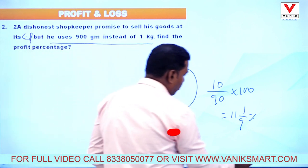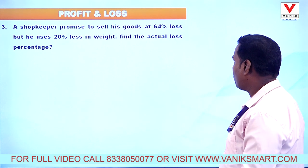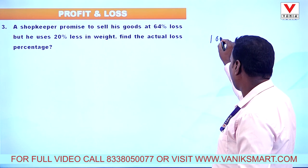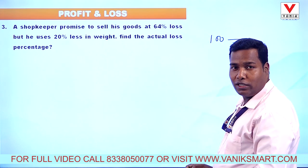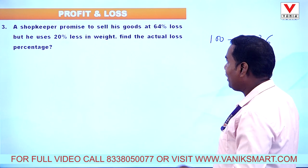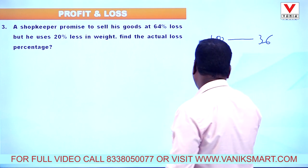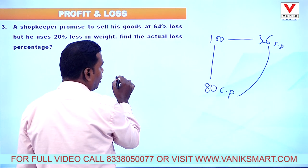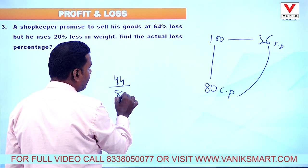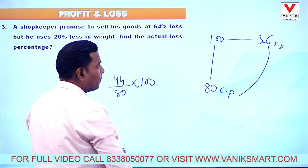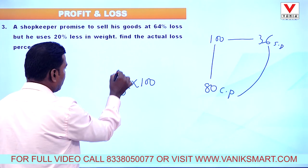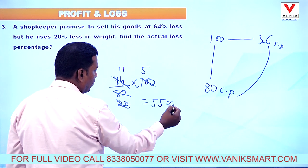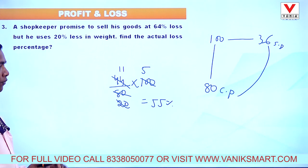Question 3: A shopkeeper promises to sell his goods at 64 percentage loss. Cost price is 100, so selling price is 36. But he uses 20 percentage less in weight — new cost price is 80. Selling price is 36, cost price is 80, so loss is 44. Loss percentage = 44/80 × 100 = 55 percentage. Actual loss is 55 percentage.